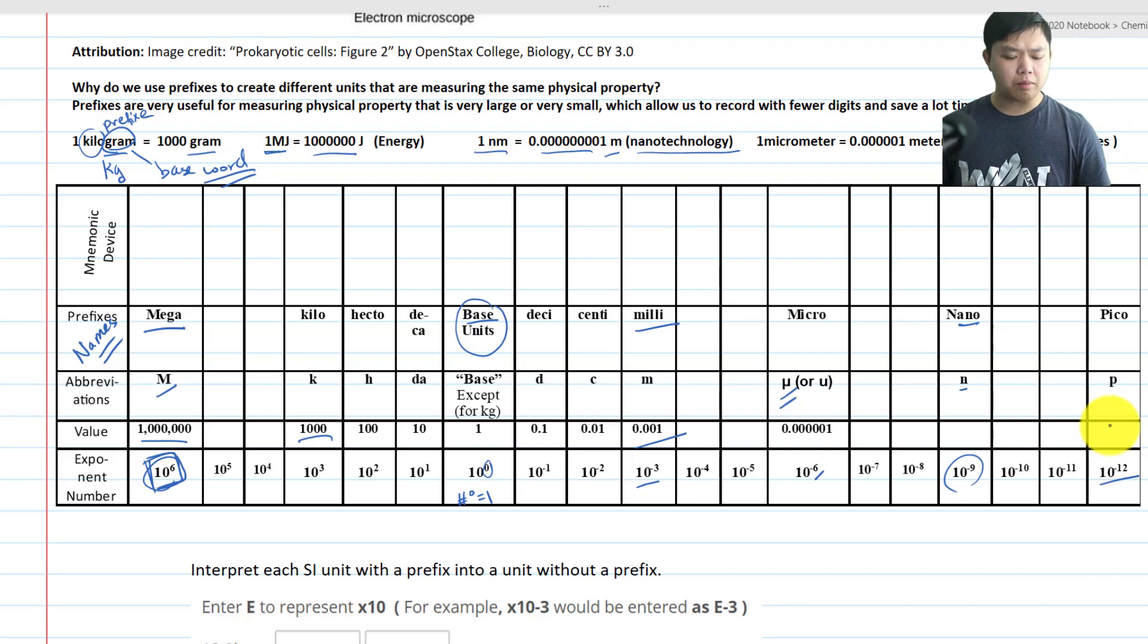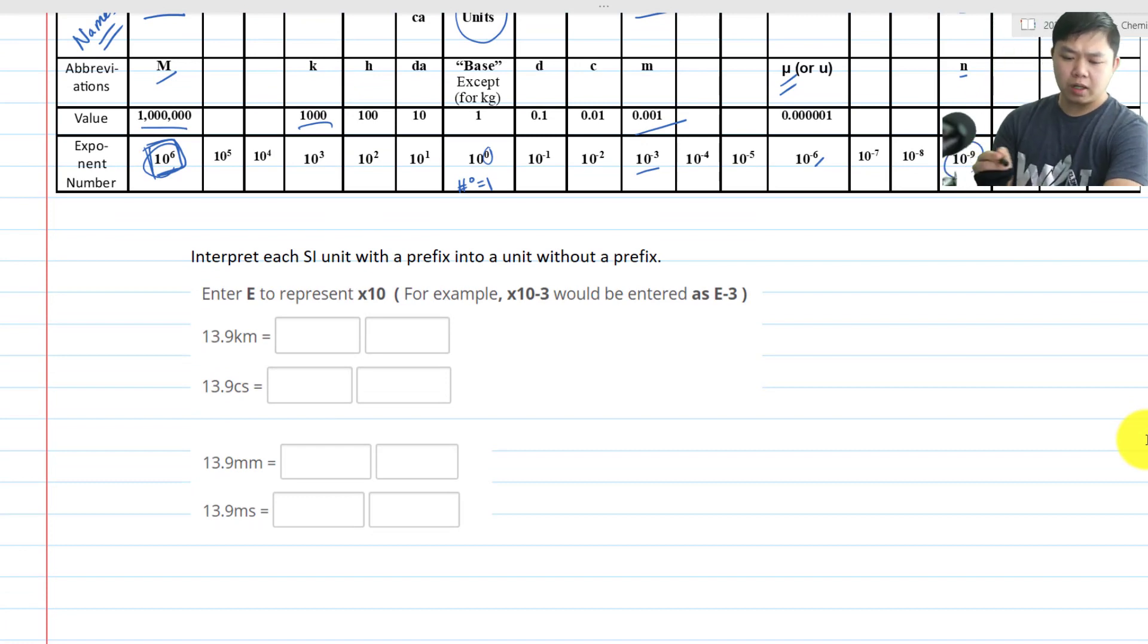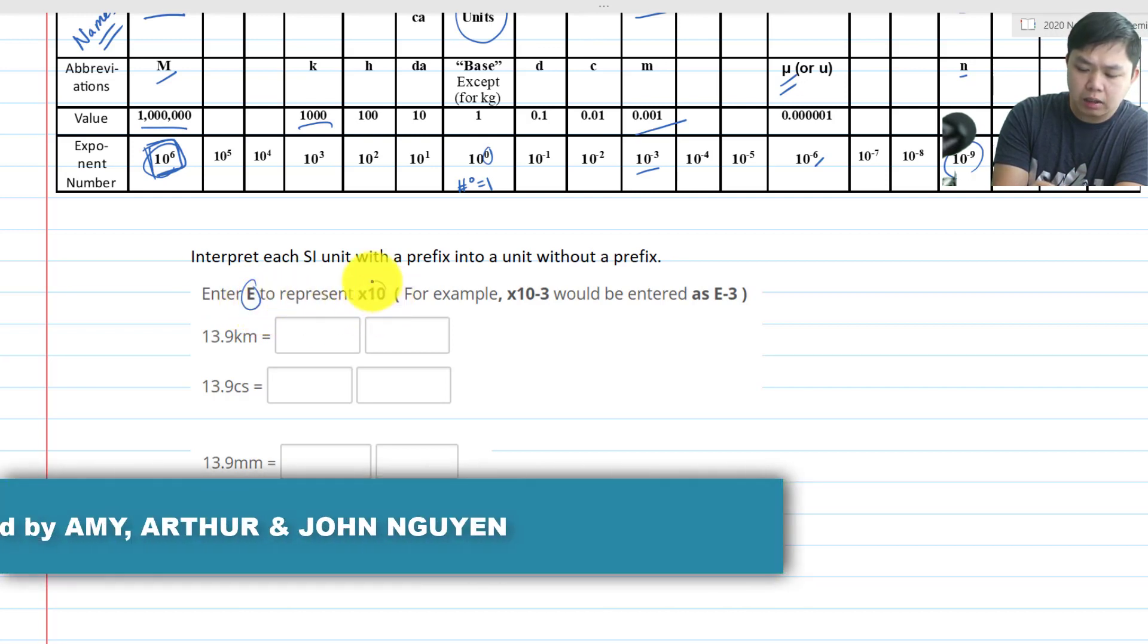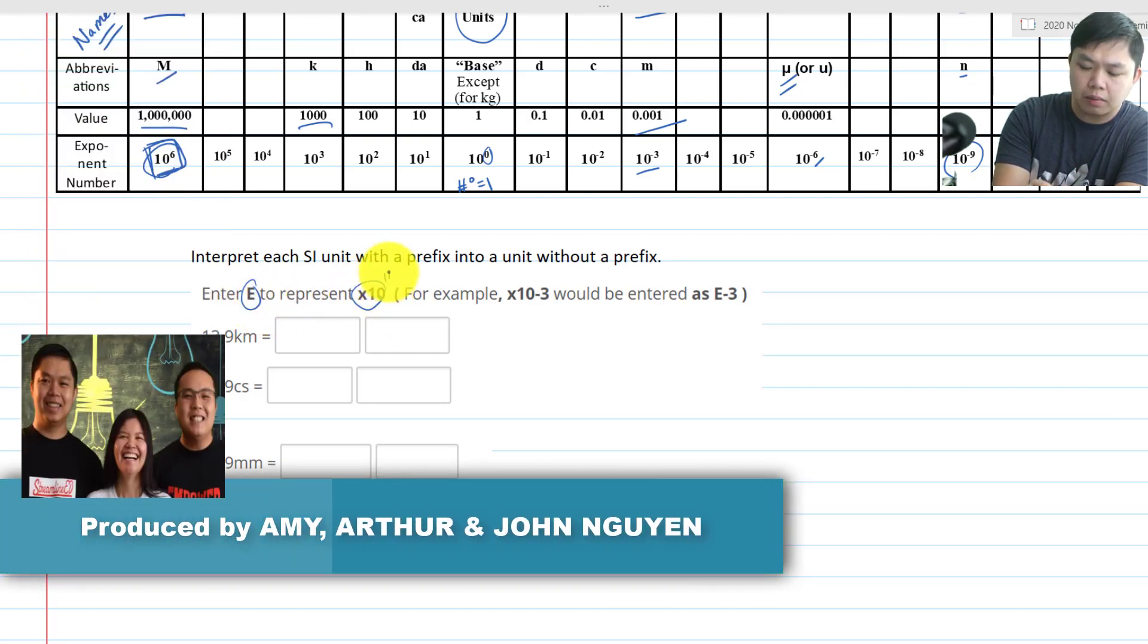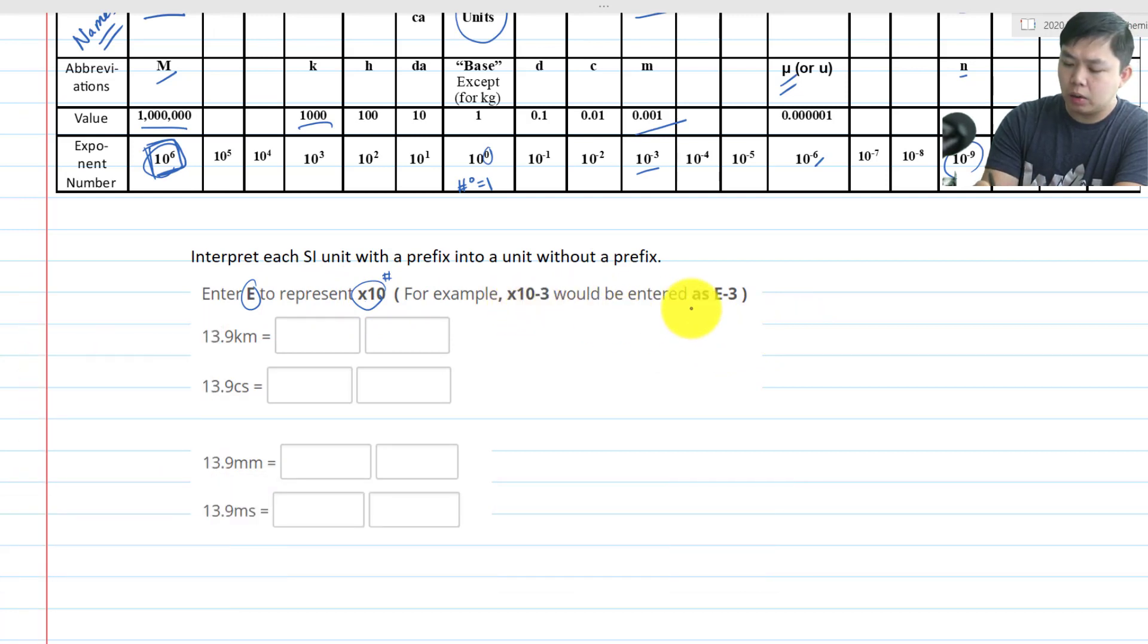Now let's do some practice problem. How can we interpret those prefixes to understand in terms of the base word? For example, right here. Another common notation that you're going to see is E on your calculator actually equals times 10 to the power of something. So instead of typing times 10 to the power of negative 3, you can just write capital E negative 3. Again, our goal to simplify our data so that we can communicate with other people about our finding.